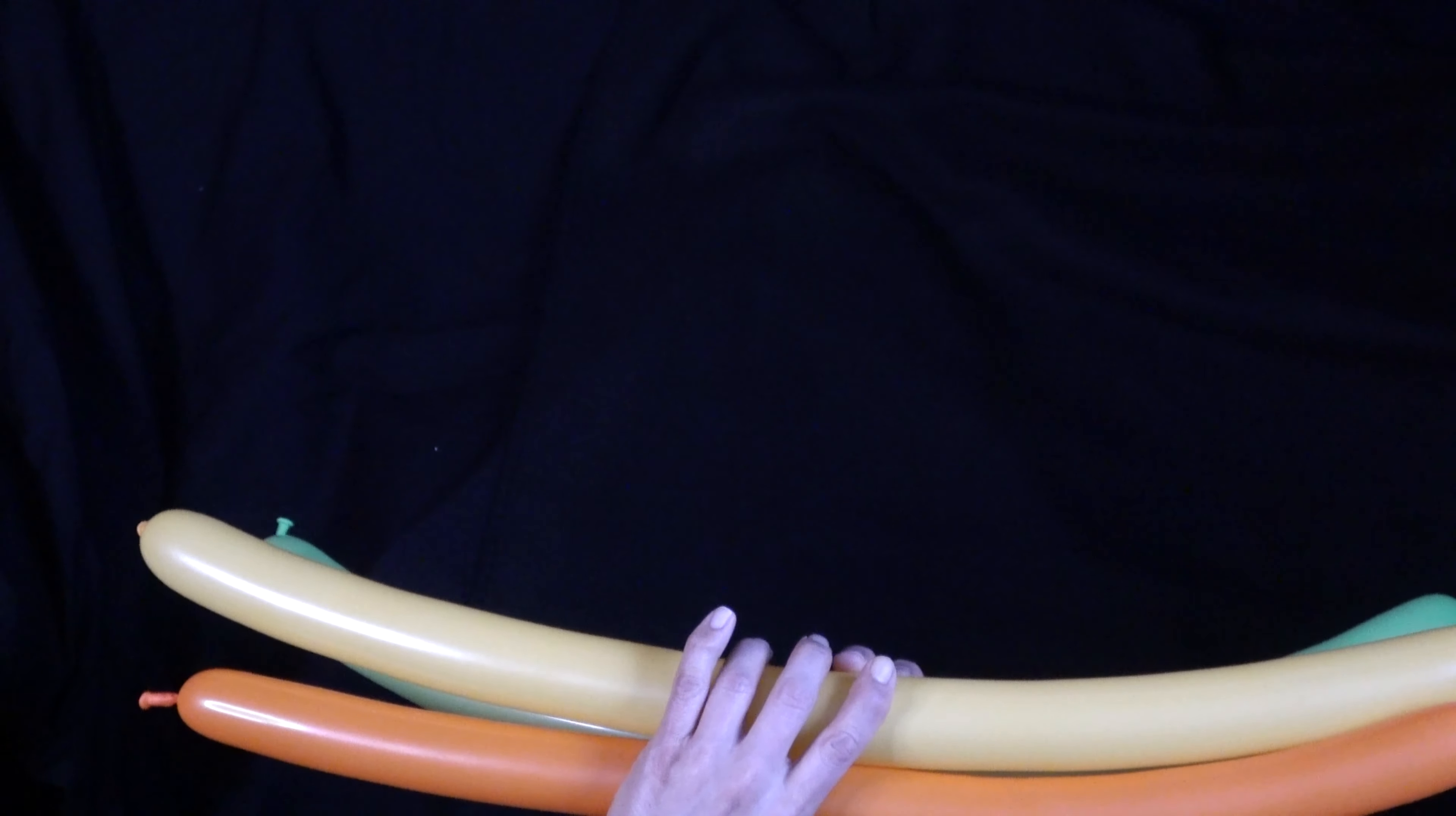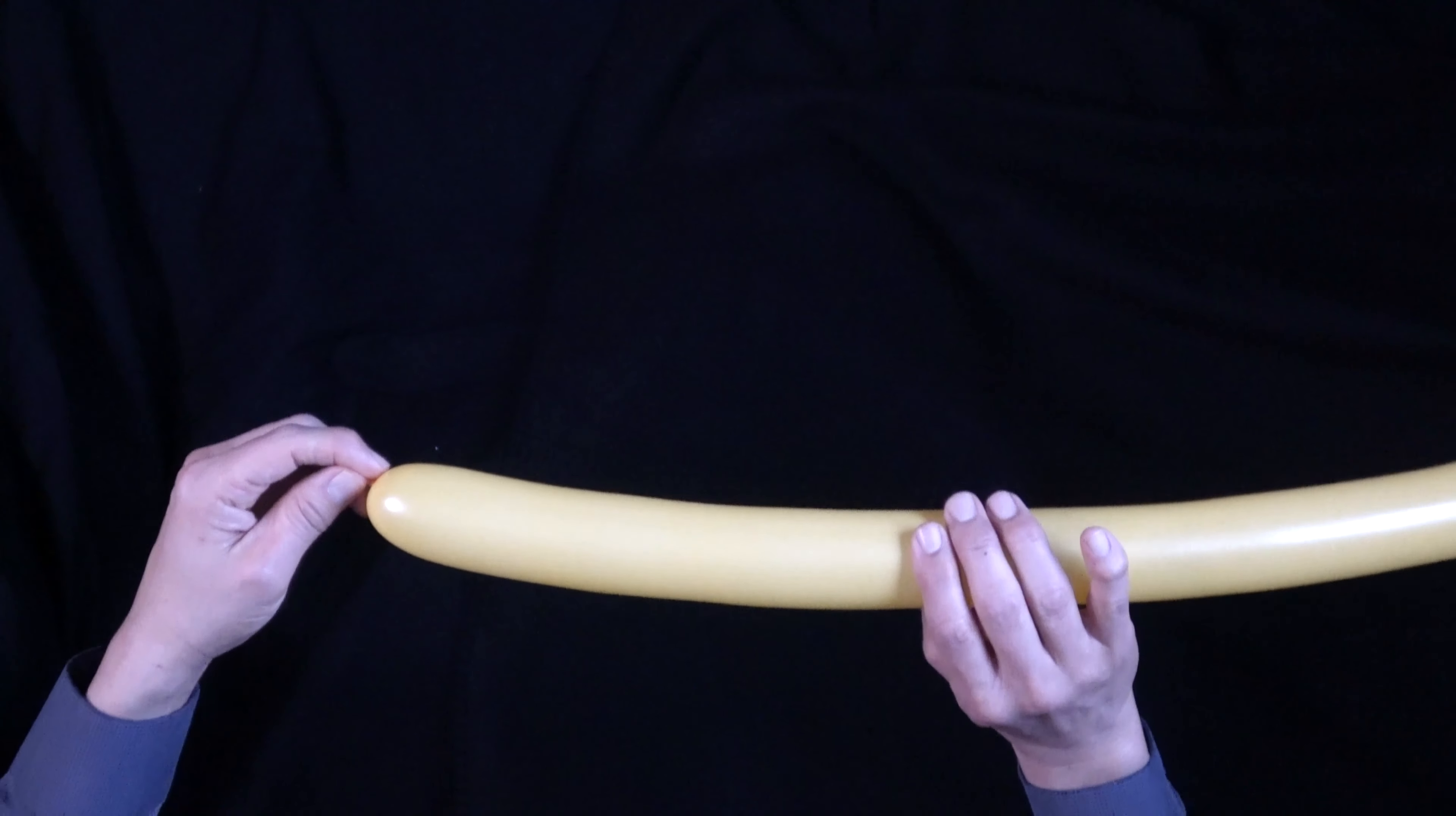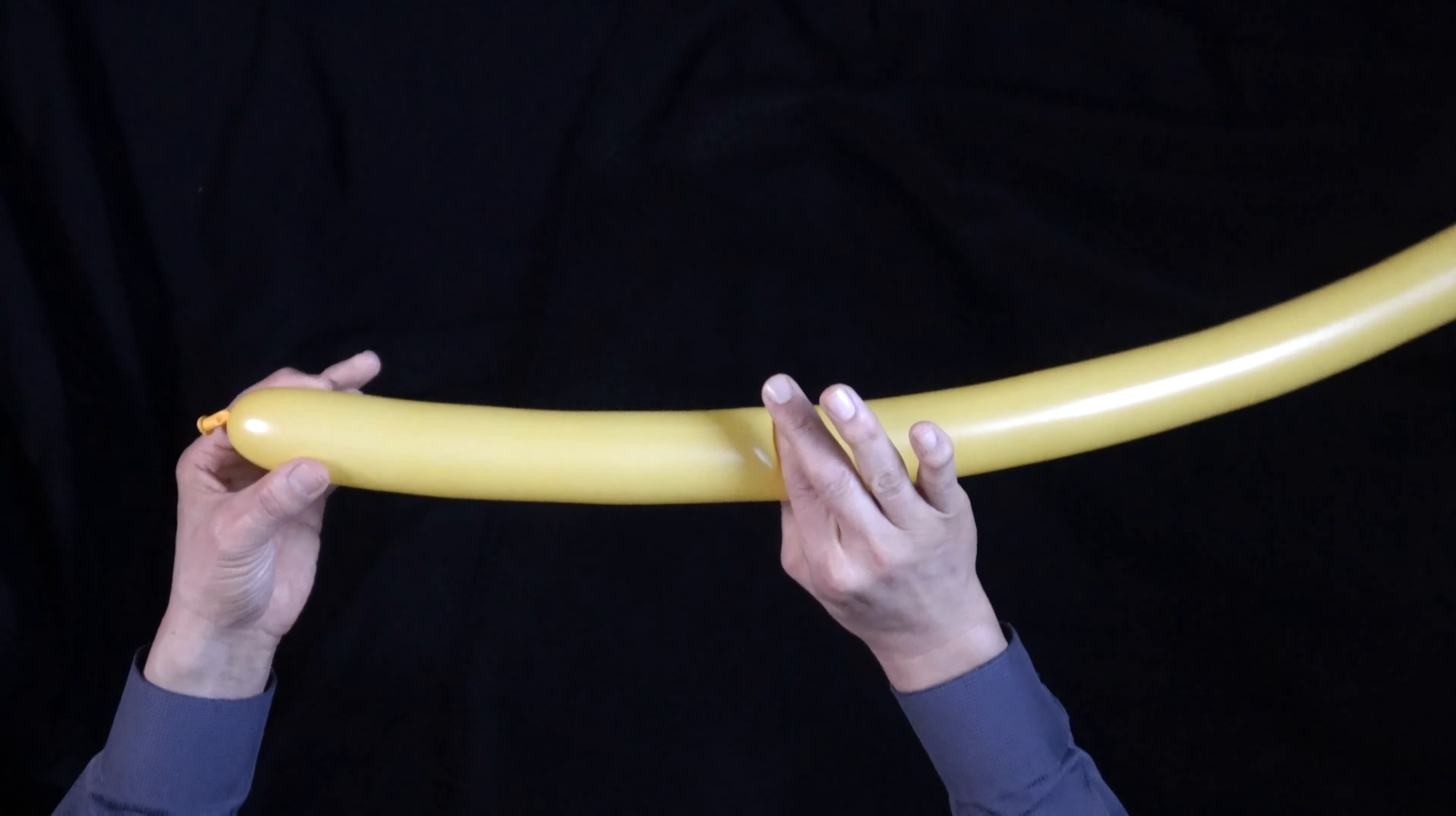You're going to do the same thing with each balloon. You're going to create a big basic twist and a pinch twist. Let's do that with one here. With practice, you'll get a distance that you'll use as your basic distance. Usually I go somewhere about here—a little over a foot. And then I pinch and twist.